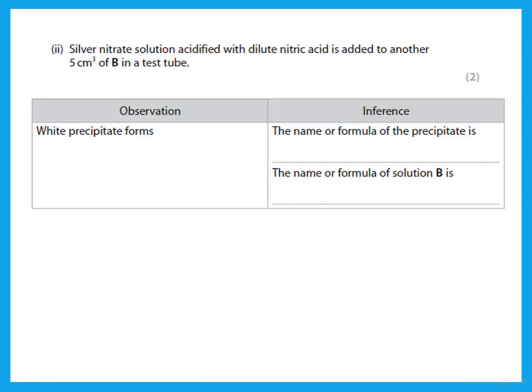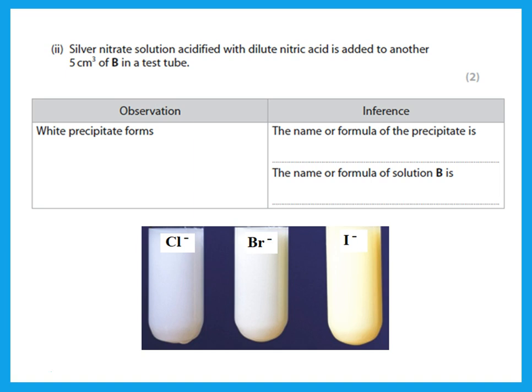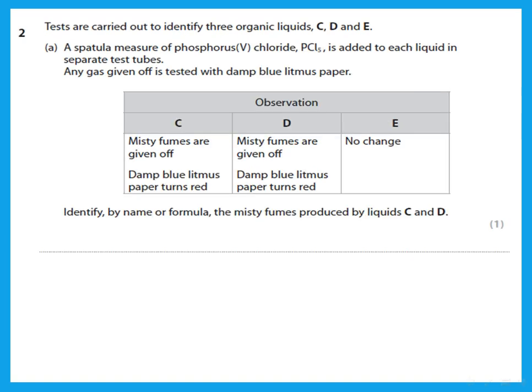Silver nitrate solution, acidified with dilute nitric acid, is added to another 5 cm³ of B and gives a white precipitate. Silver nitrate tests for halides — a white precipitate means chloride, forming silver chloride. Combined with the H⁺ cation from the previous test, the formula of solution B is HCl — hydrochloric acid.